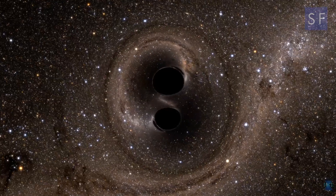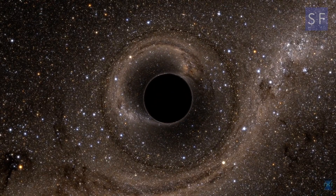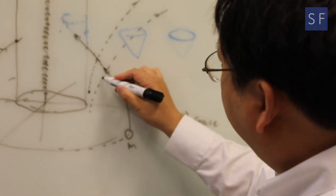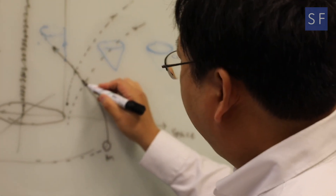My name is Yanbei Chen. I'm a professor of physics at the California Institute of Technology. I work on the theory of gravitational wave sources, black holes, and how to use gravitational waves to test relativity — to measure predictions of general relativity in the context of objects with strong gravity, spacetime with high curvature.